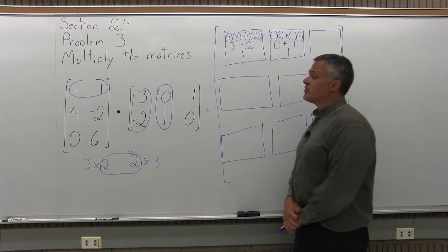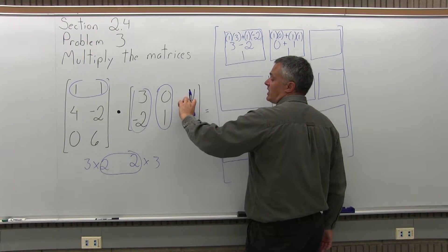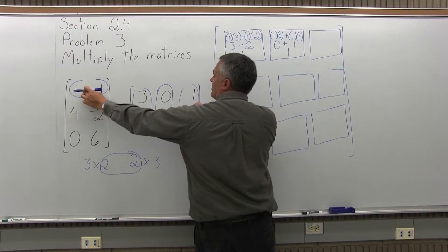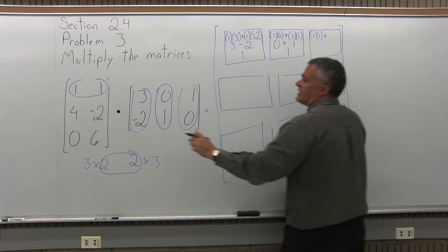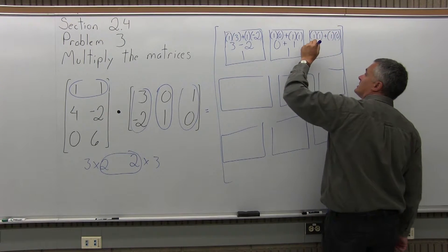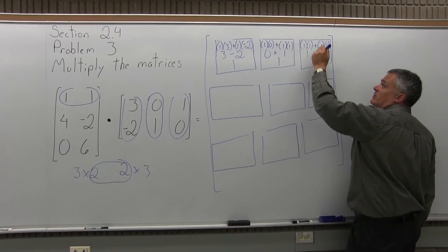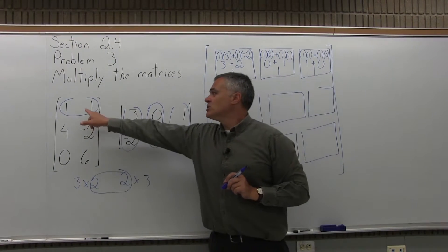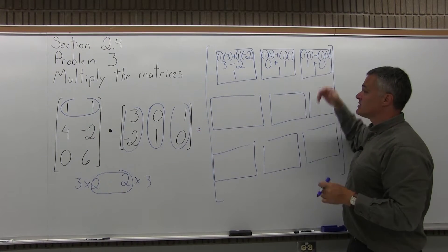To finish the top row of the solution, I'm going to multiply the top row, 1, 1, from the first matrix times the last column, 1, 0, of the second matrix. First times first is 1 times 1, and second times second is 1 times 0. So 1 times 1 is 1, and 1 times 0 is 0. When you add 1 plus 0 you get 1. That value goes in the top row and last column of my solution.